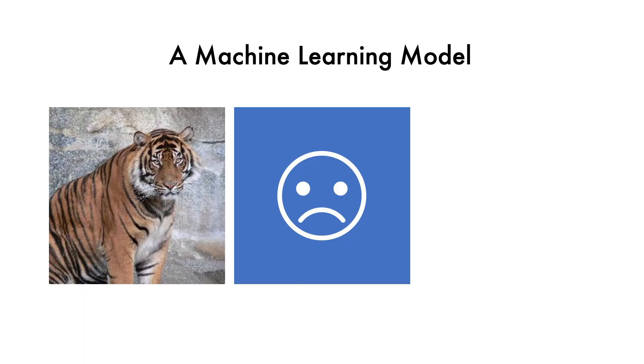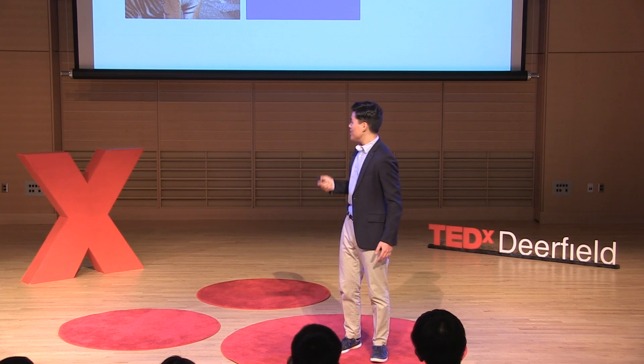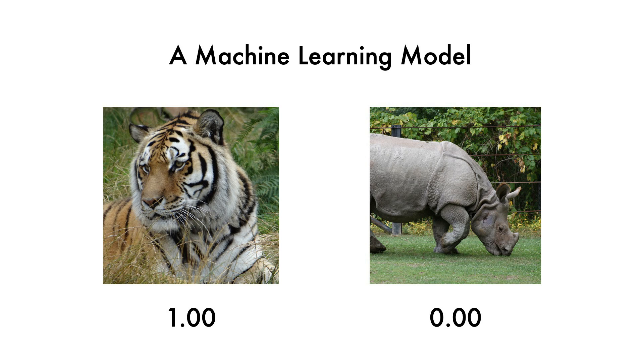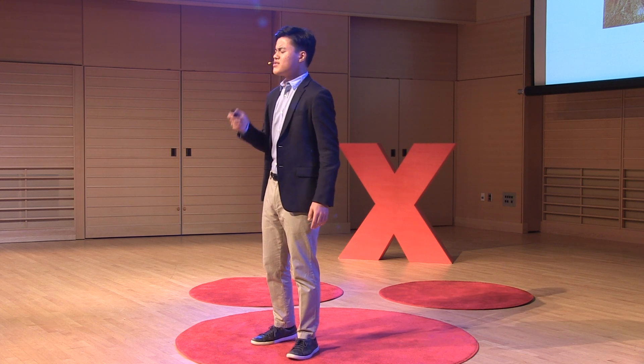Here is Joe, our friendly neighborhood machine learning model. We want Joe to tell us whether or not this image is a tiger. Joe's pretty sad right now because he has no clue what to do. This is where we train our model. In order for Joe to tell us what a tiger is and what it isn't, we as humans must first tell him what a tiger looks like and what it doesn't. There's a slight problem, however — Joe doesn't see this image like we do. The one thing Joe can do is interpret numbers.